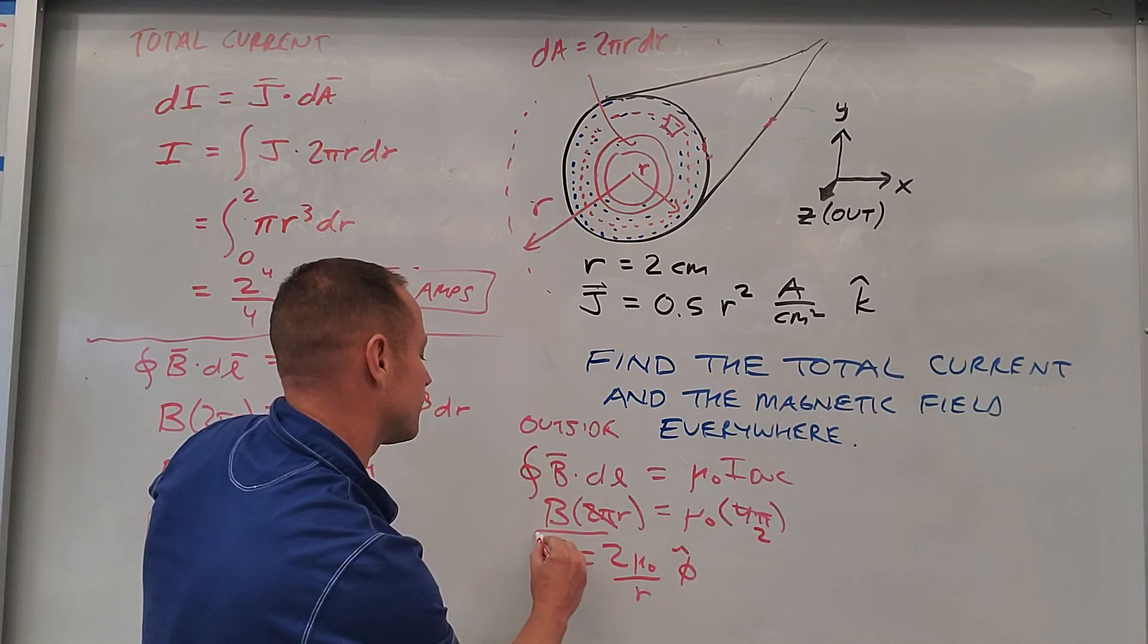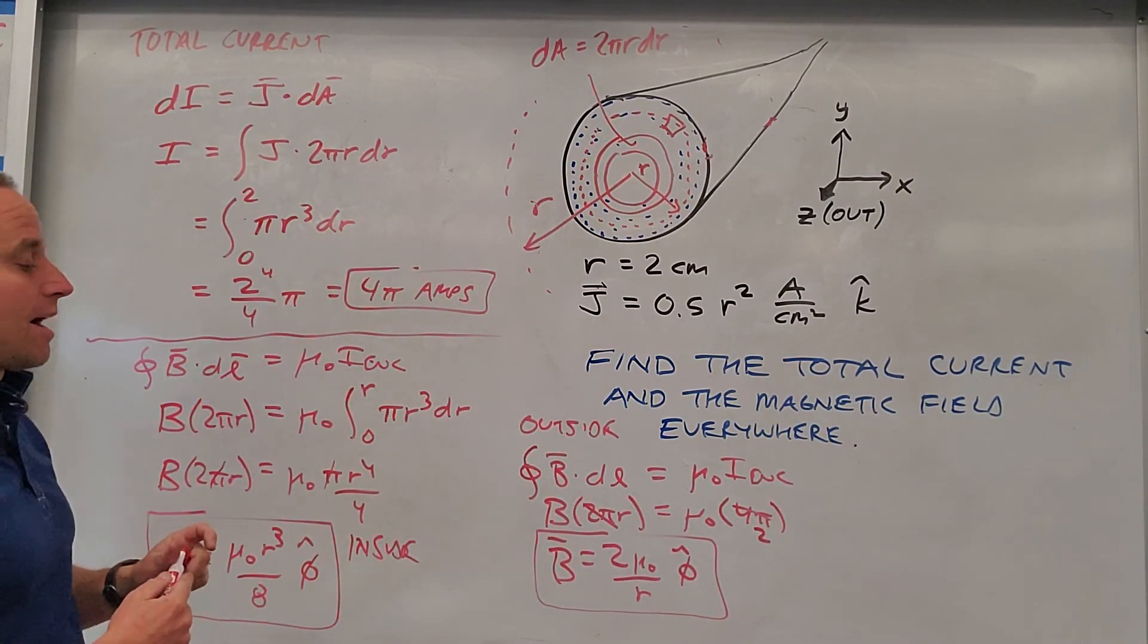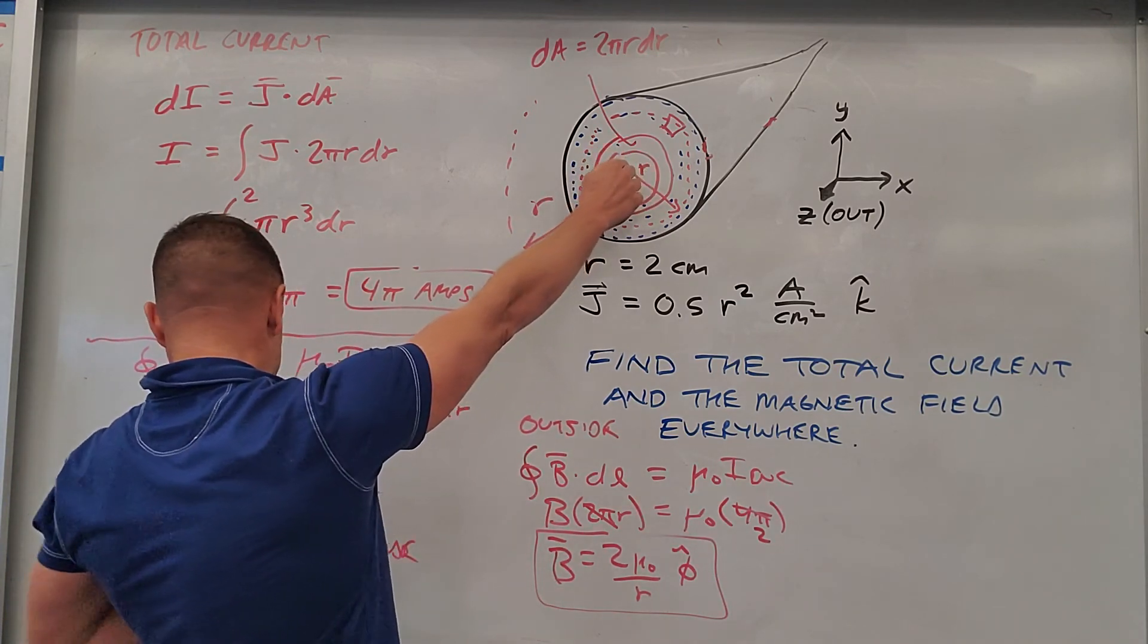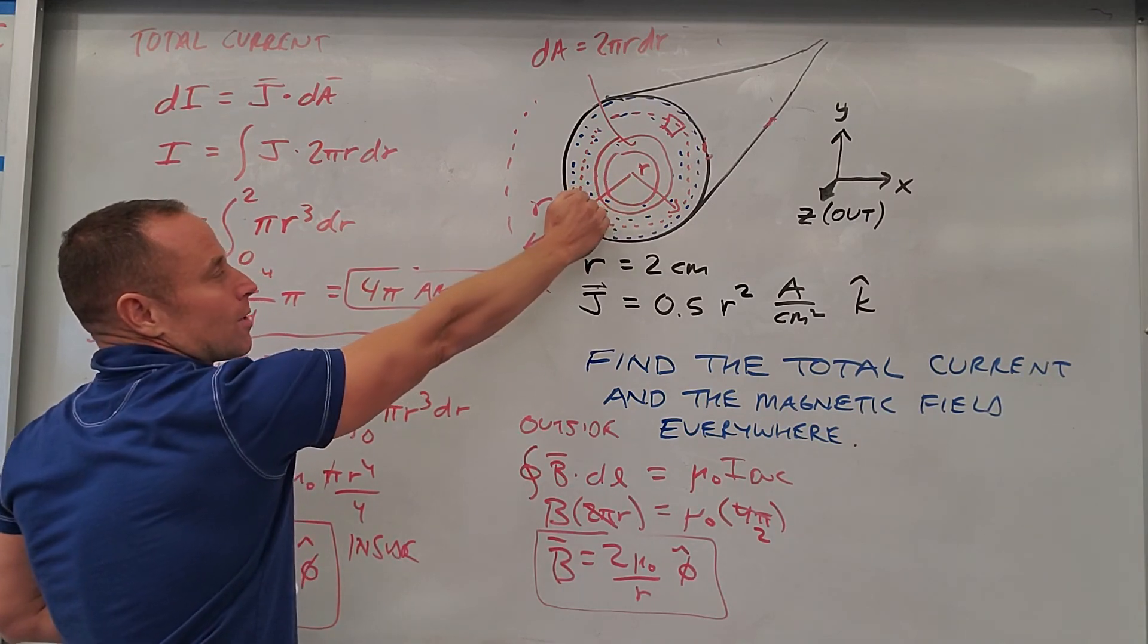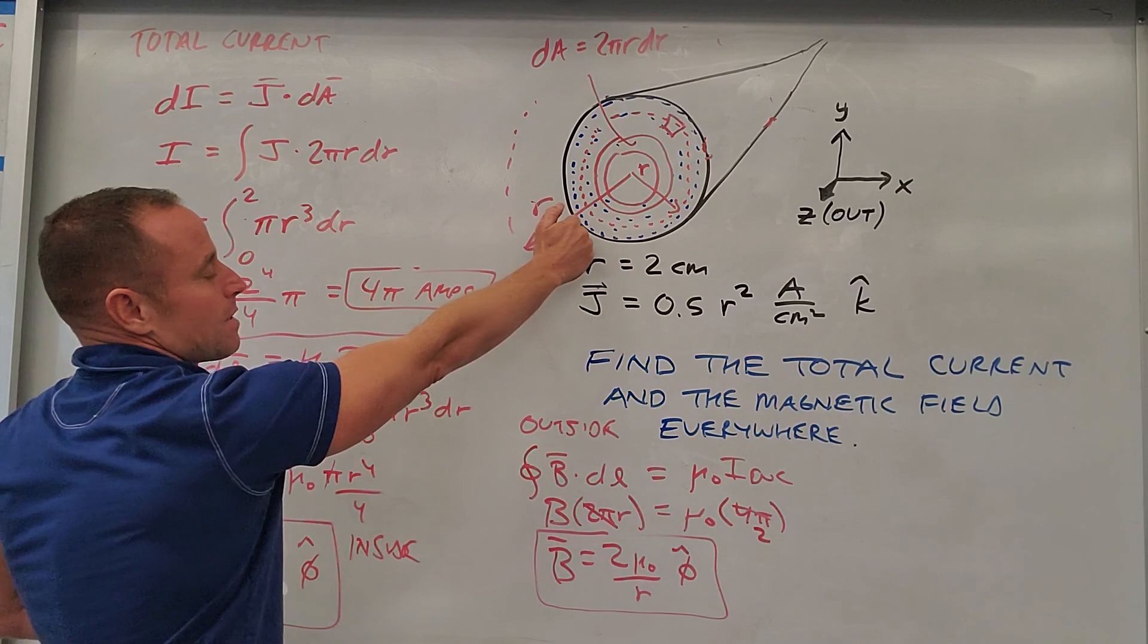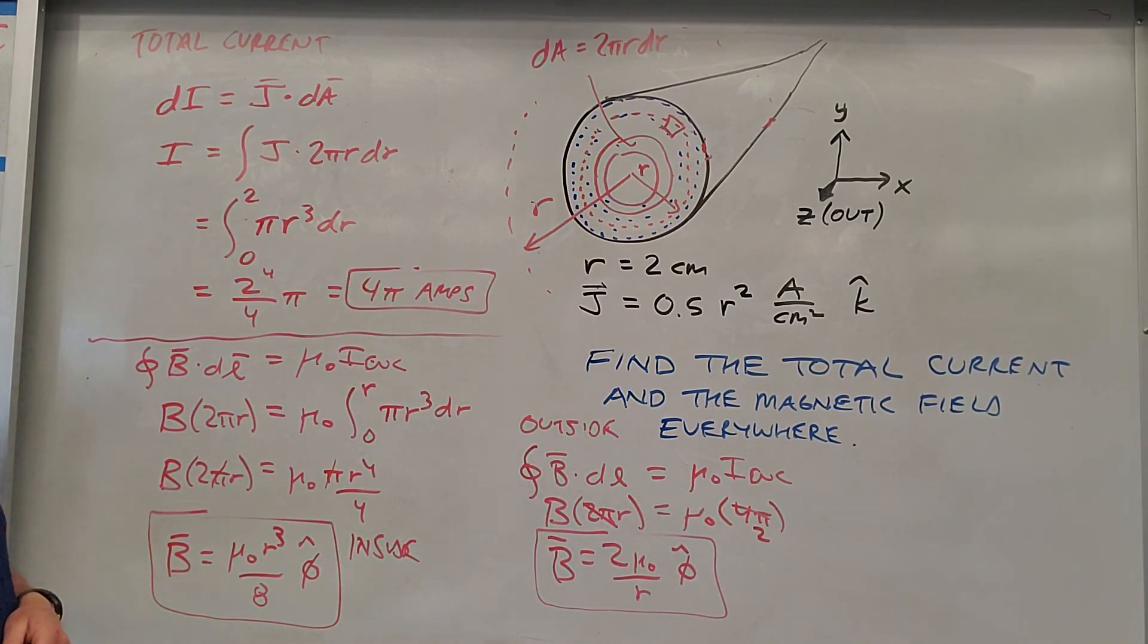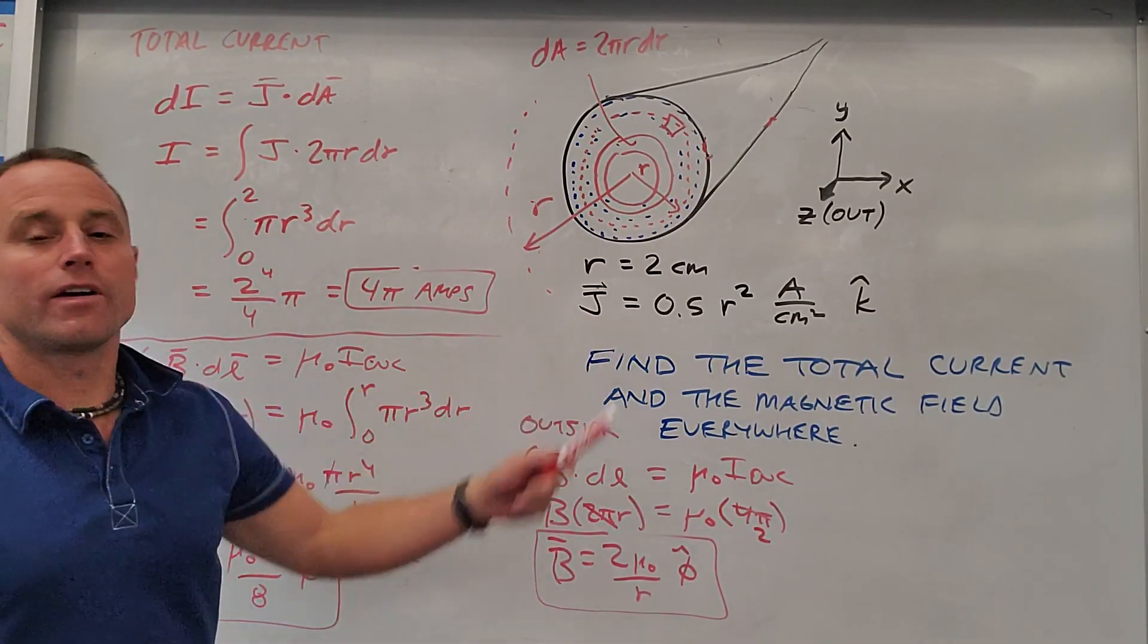Swirling around in the phi hat direction. So it falls off like 1 over R when you're away from a wire. Once you're outside, it's growing while you're inside because as you move out, it's growing as R cubed because as you move out, you're enclosing more and more and more current. And then once you're out here, you've enclosed it all, and the amount of current you enclosed doesn't depend on the radius of that Amperian loop anymore. So there's an example of using Ampere's Law with a varying current density.